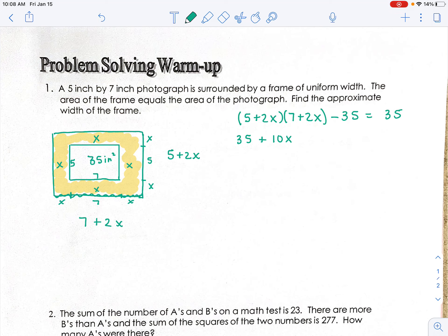So I'm going to distribute. 5 times 7 is 35, 5 times 2 is 10x, 2x times 7 is 14x, 2x times 2x is 4x squared. Let's add like terms here. So I've got 4x² + 24x, and my 35s will cancel out. On this side it equals 35.